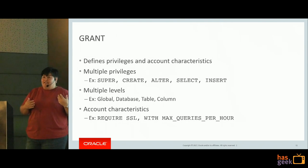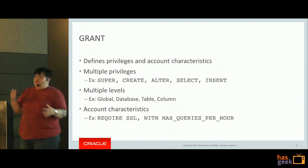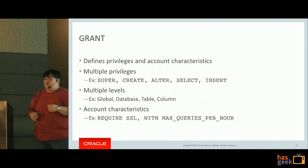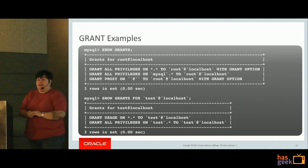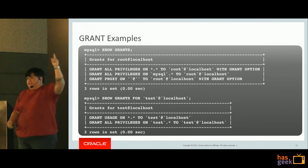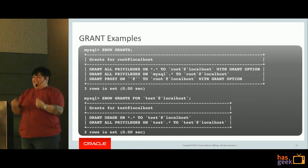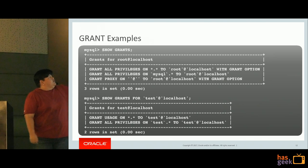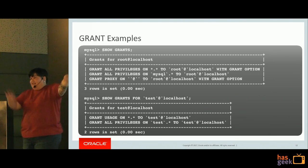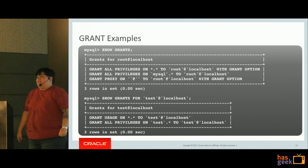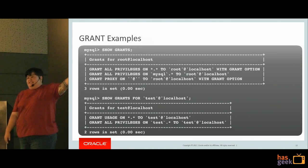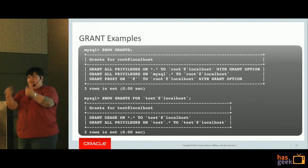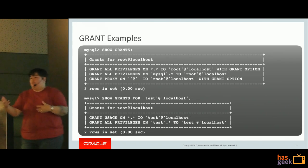There are many manual pages covering the GRANT command specifically, so if you're starting to handle user accounts and access control, those are pages you'll want to read early on. SHOW GRANTS shows the grants for the connected user. For root, it shows 'GRANT ALL PRIVILEGES on *.* WITH GRANT OPTION' - meaning root has global privileges on everything and can grant permissions to others.